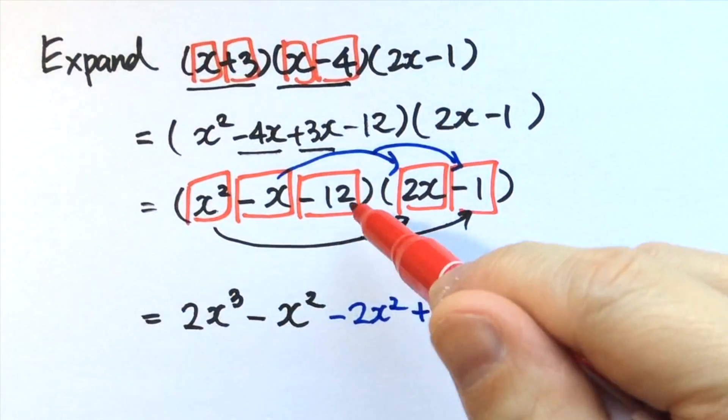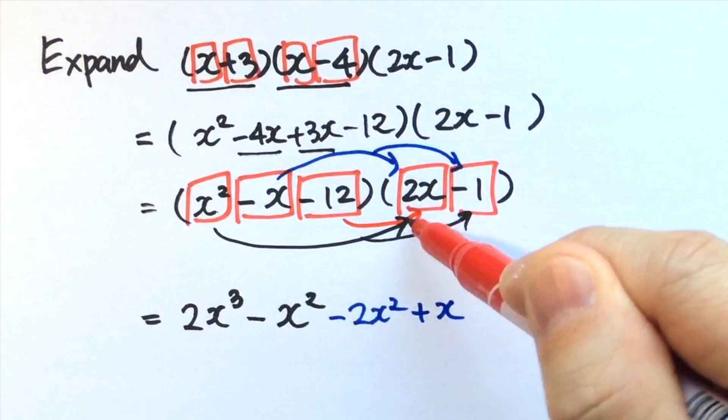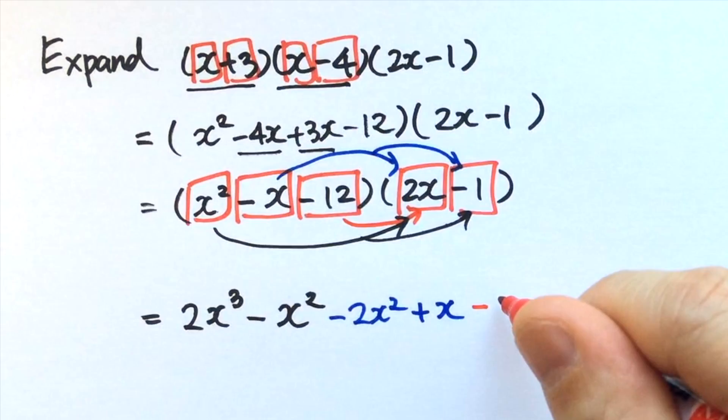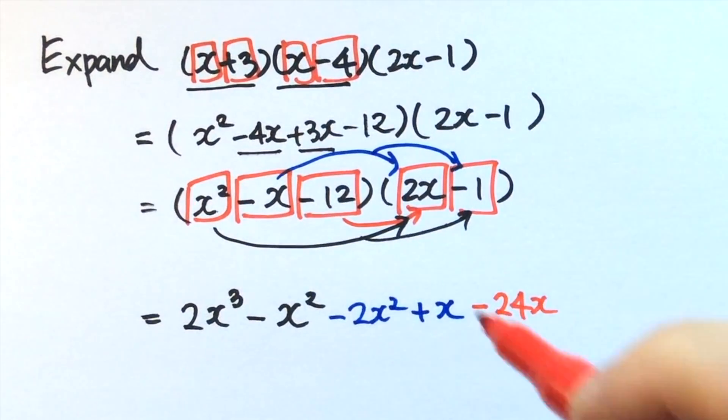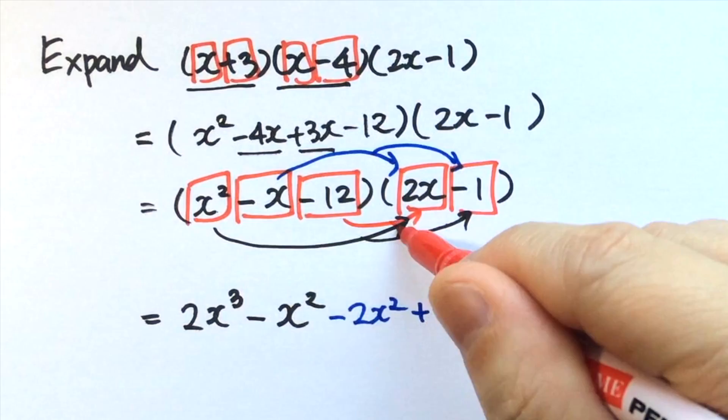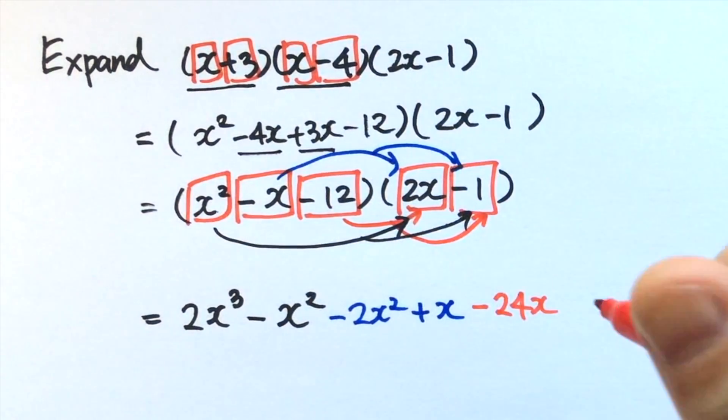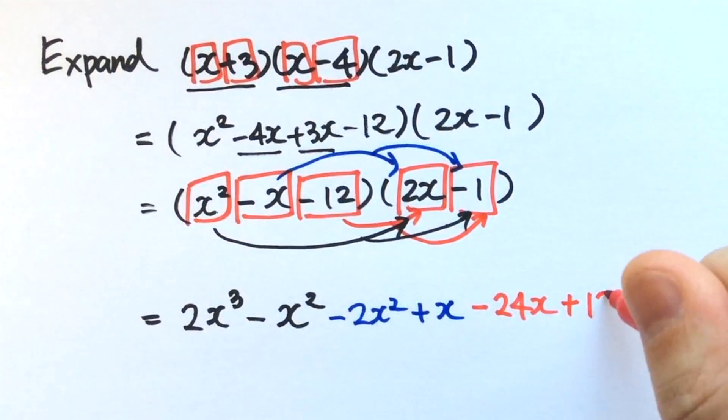And finally, negative 12 times 2x gives negative 24x. Last one, negative 12 times negative 1 gives plus 12.